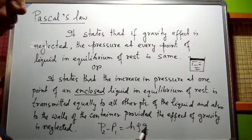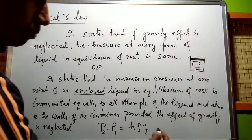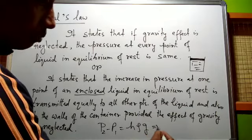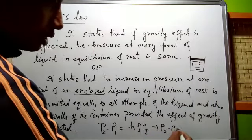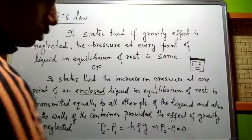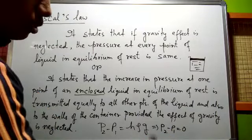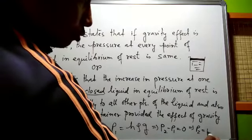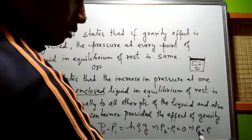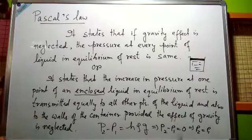If Z is equal to zero, then P2 minus P1 equals zero, which implies that P2 equals P1. This confirms that when gravity is neglected, the pressure at every point in the liquid is the same.